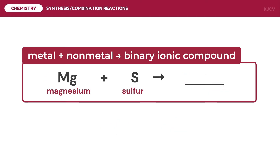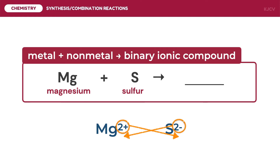For the next example, let's predict the product formed by magnesium and sulfur. Magnesium belongs to group 2A, having a charge of positive 2. Sulfur belongs to group 6A, having a charge of negative 2. After doing a crisscross of charges, we get MgS or magnesium sulfide. This equation is already balanced: one mole of magnesium reacts with one mole of sulfur to produce magnesium sulfide.